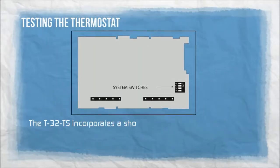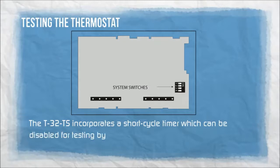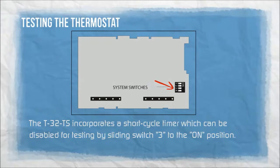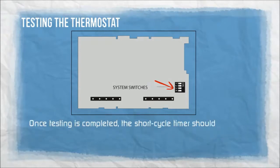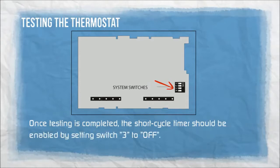The T32TS incorporates a short cycle timer which can be disabled for testing by sliding switch 3 to the ON position. Once testing is completed, the short cycle timer should be enabled by setting switch 3 to OFF.